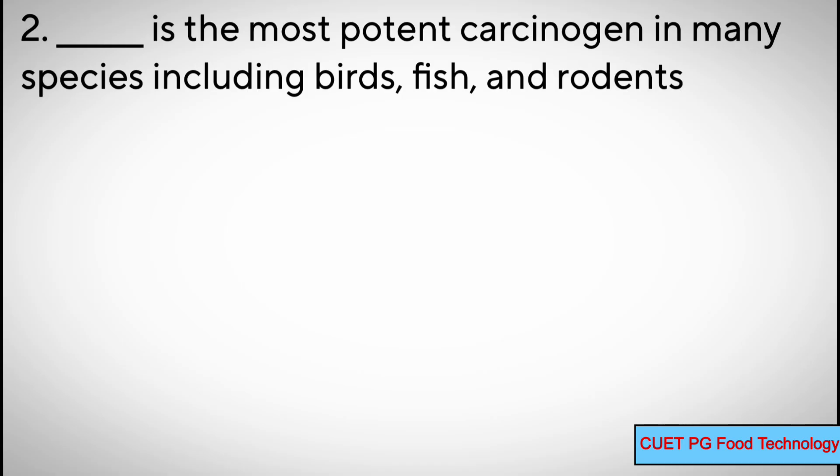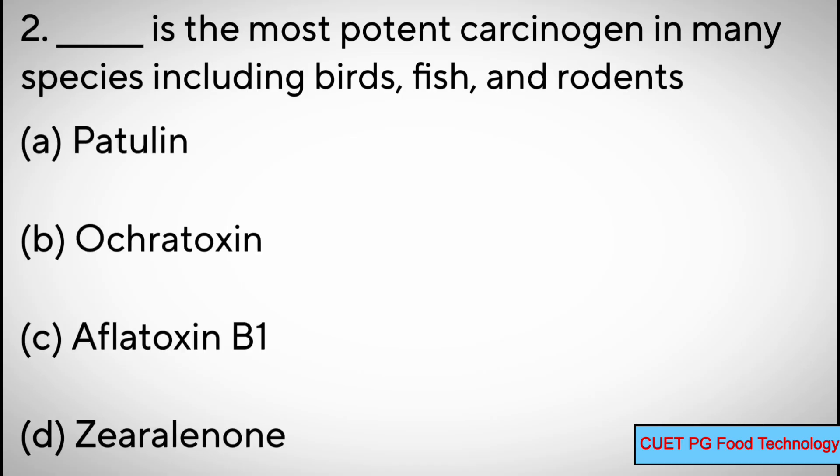Question number two: dash is the most important carcinogen in many species including birds, fish, and rodents — options: A) patulin, B) ochratoxin, C) aflatoxin B1, D) zearalenone. Correct answer: C) aflatoxin B1.